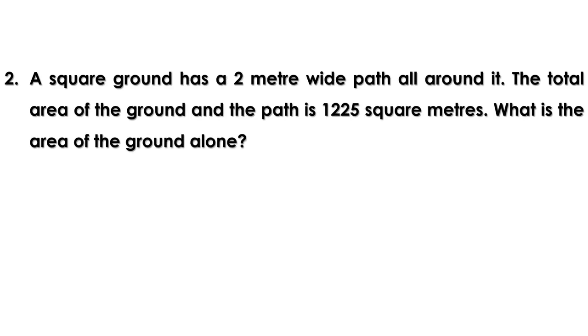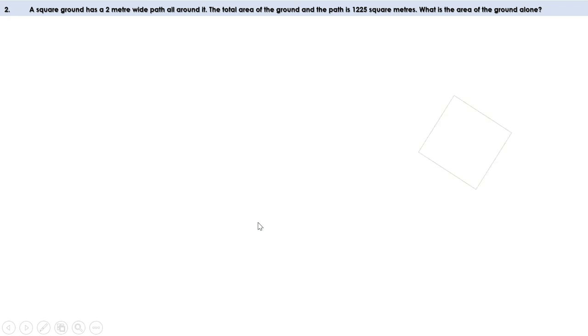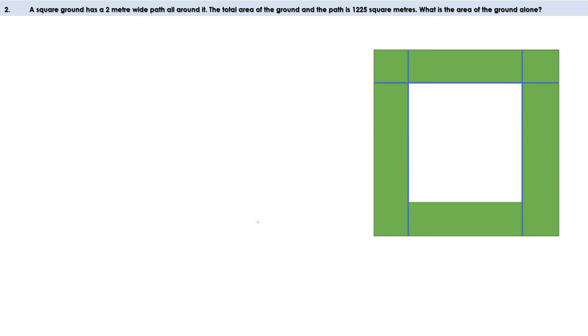Second problem: a square ground has a 2-meter wide path all around it. The total area of the ground and the path is 1225 square meters. What is the area of the ground alone? There is a square ground and a path of width 2 meters all around it. The side of the ground is x meters.